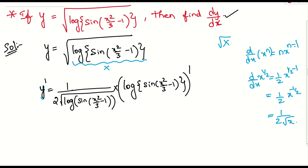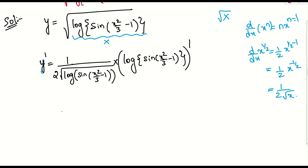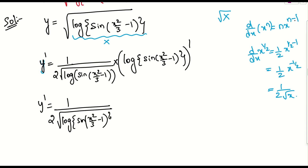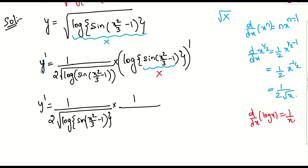This is a chain rule. Whatever you have taken as capital X, we need to differentiate that function. Now, log — I have to come from outside. This is in the form of log of something. What is that something? Log of red colour X. What is log x derivative? We know that log x derivative will be 1 by x alone. So log x derivative: d by dx of log x will be 1 by x if base is e. So this should be 1 by x, where x is sin of x squared by 3 minus 1. I have taken the derivative of that part.